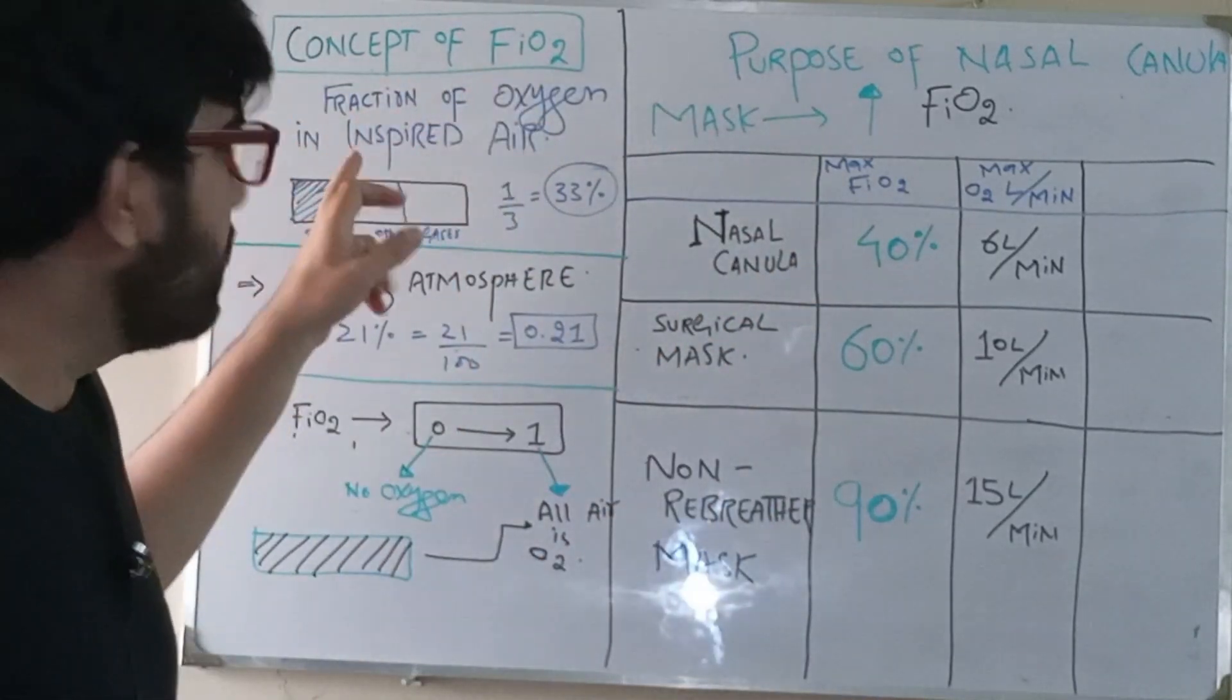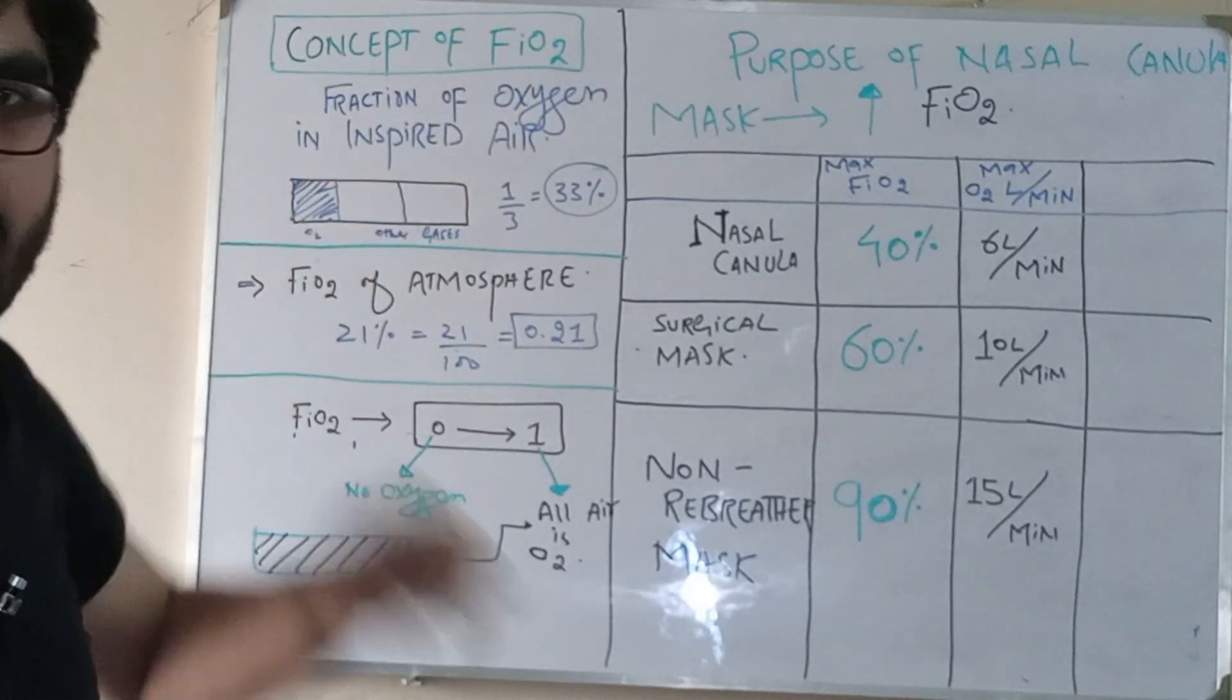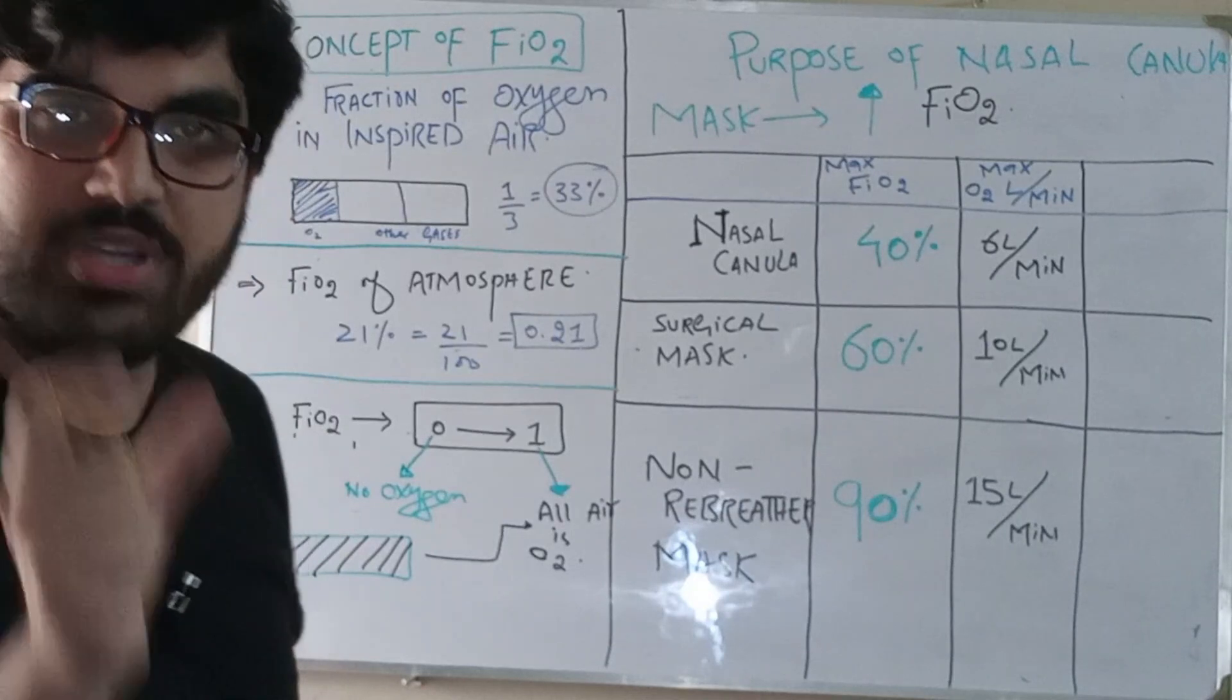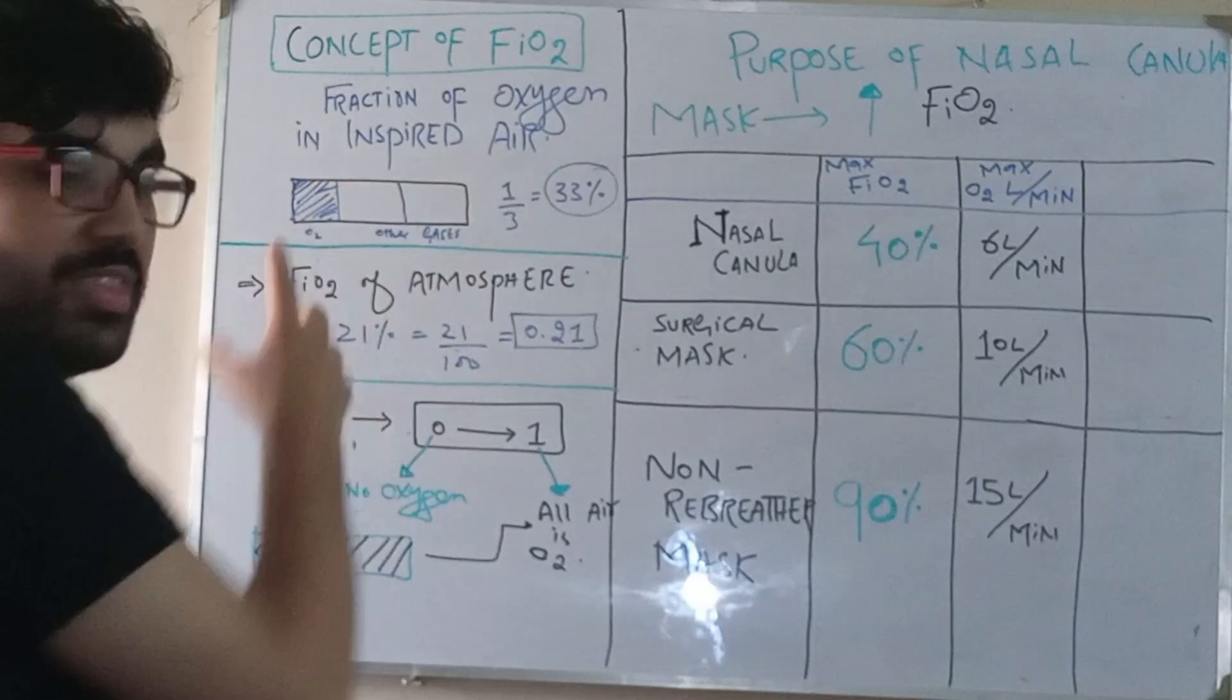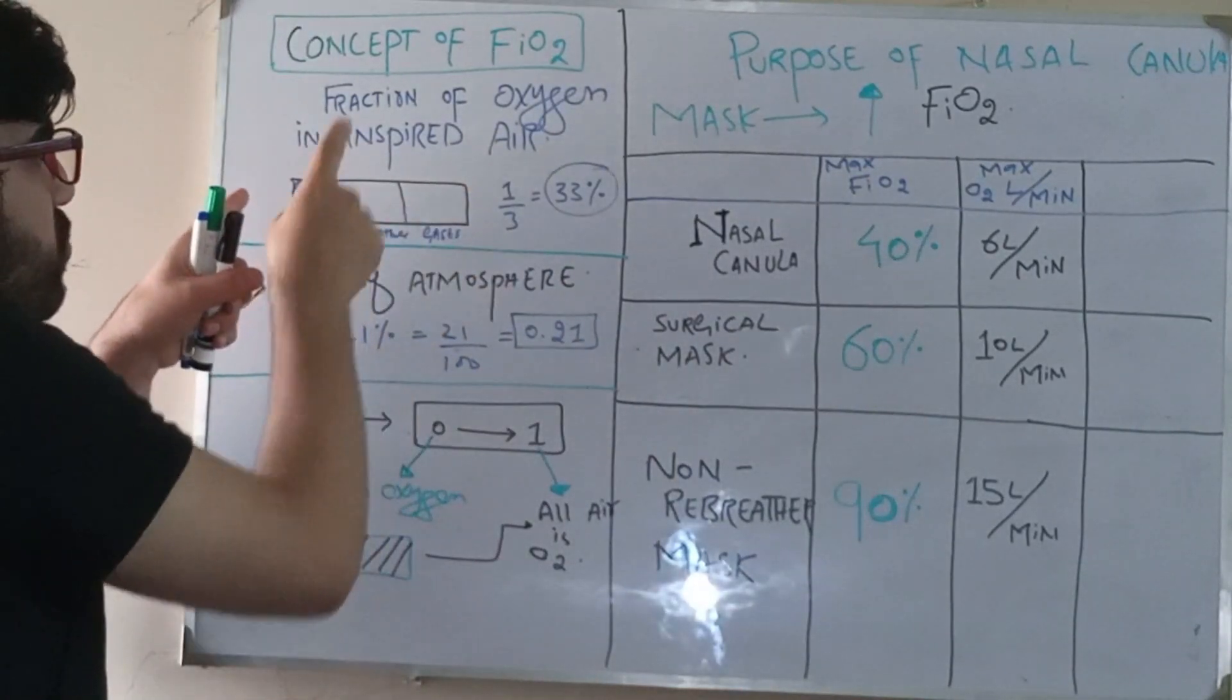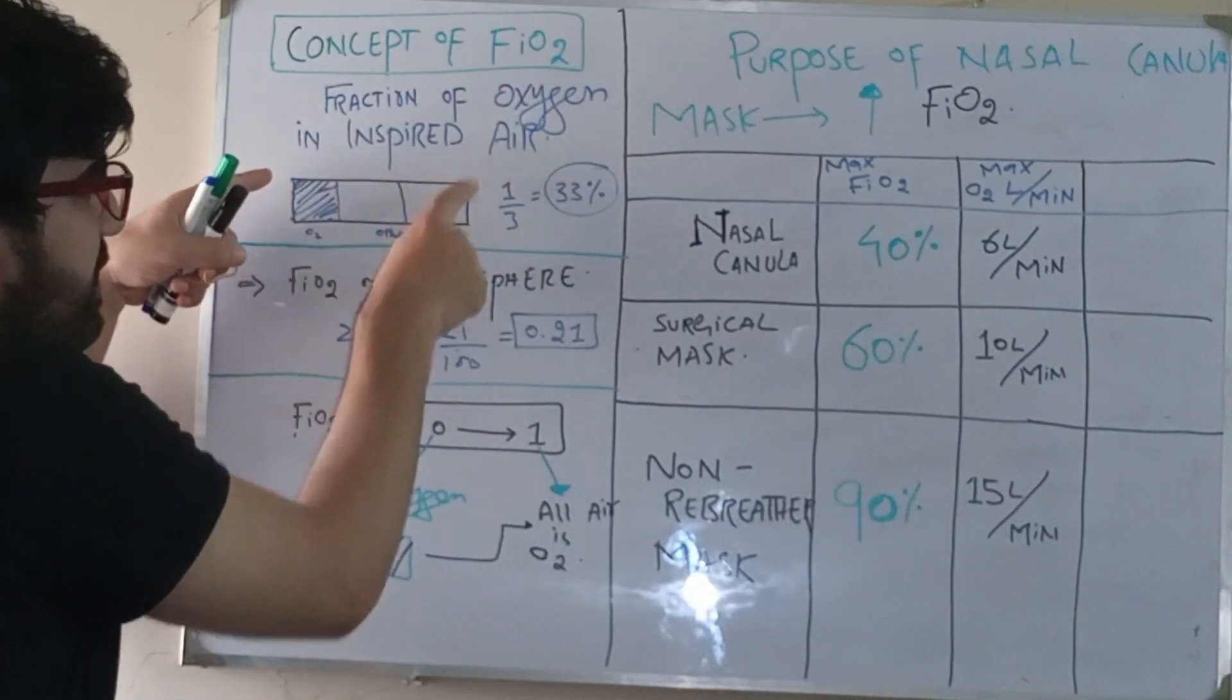The concept of FiO2 is the fraction of oxygen in inspired air - the air that we inhale, how much fraction of oxygen is in that air. Let's suppose this is the total amount of air that we inhale. It is the fraction of oxygen in the total amount of air.